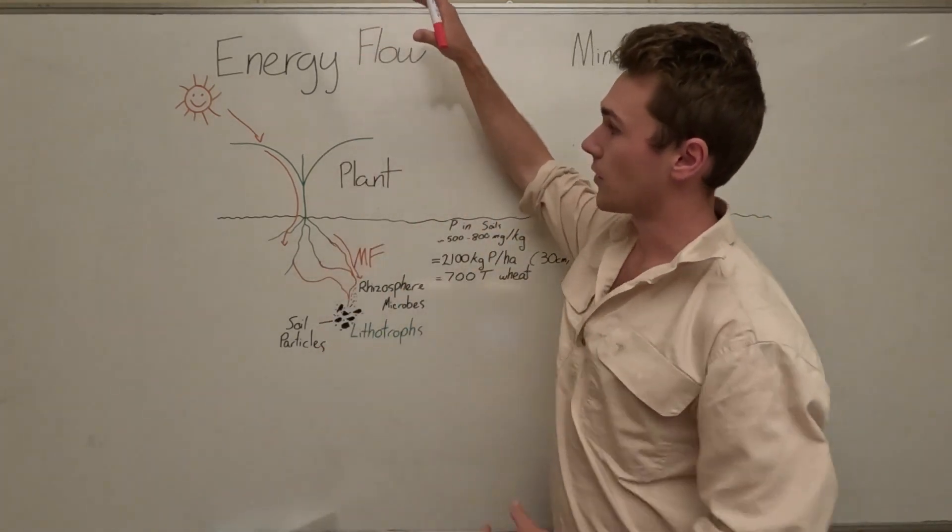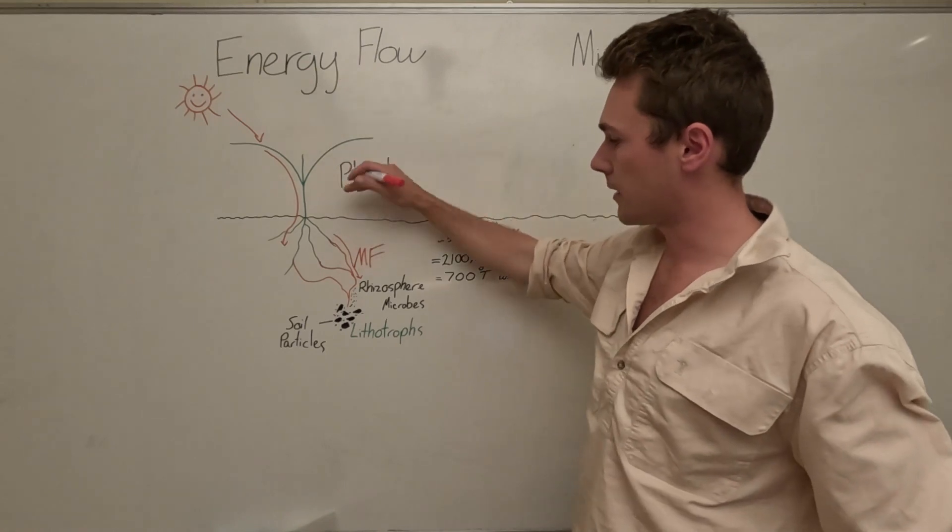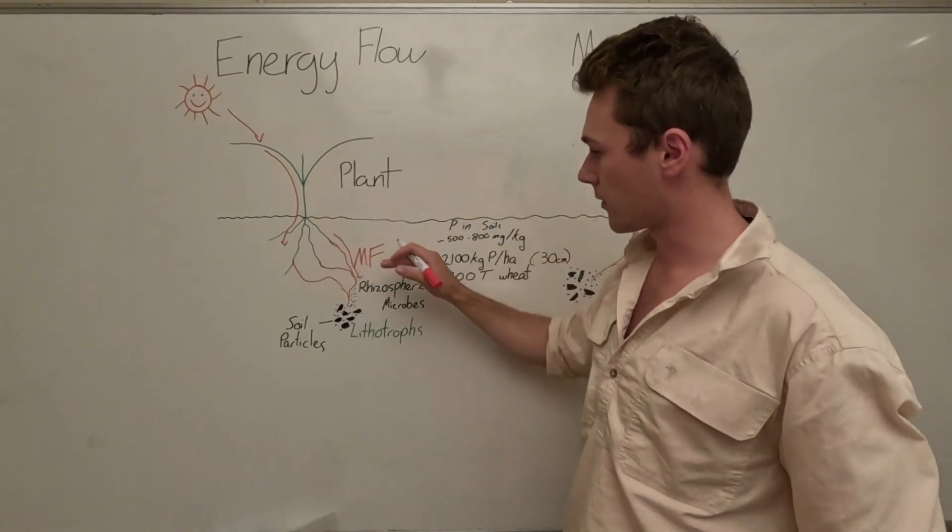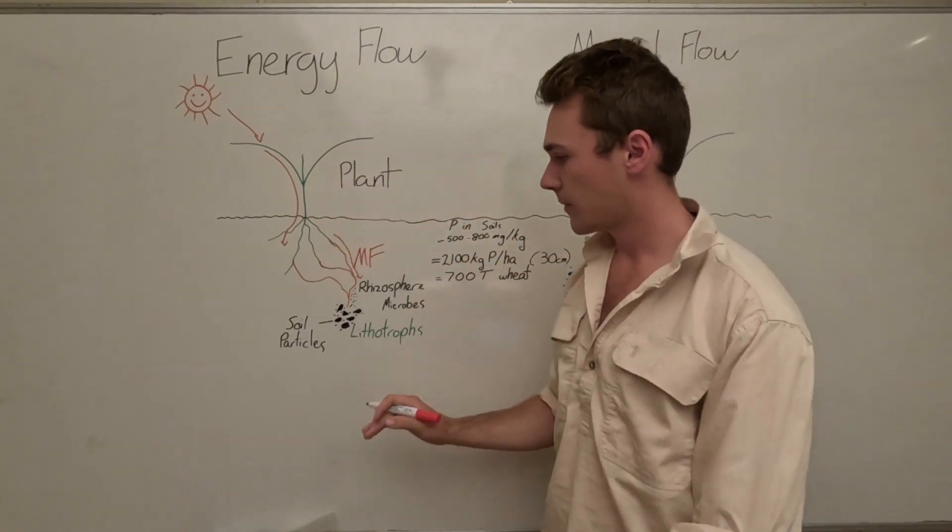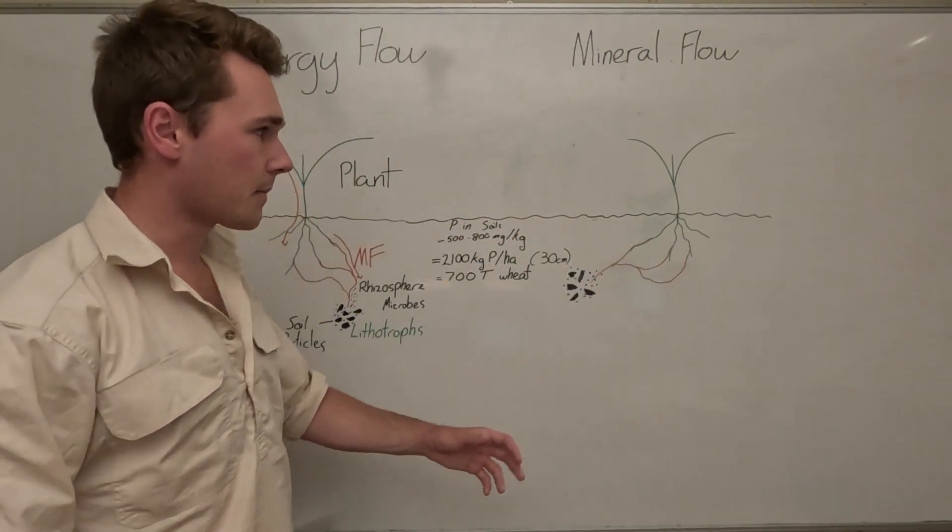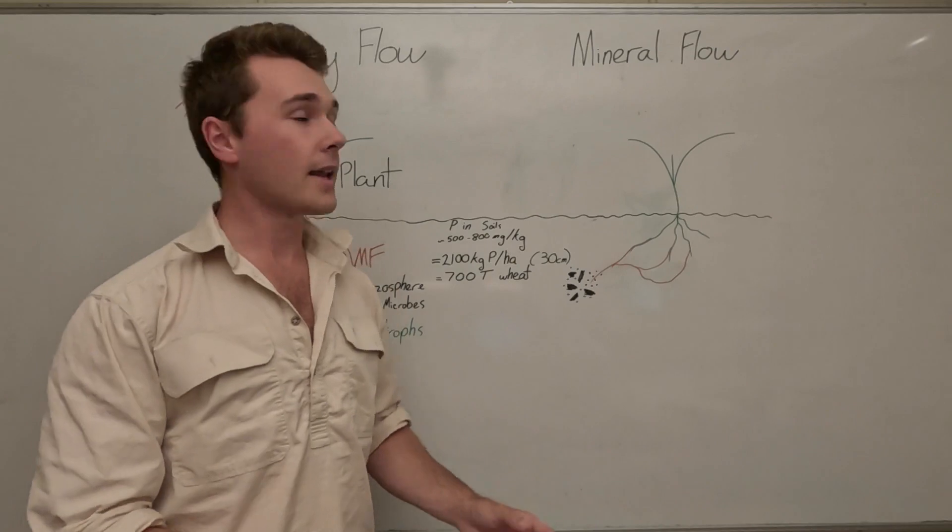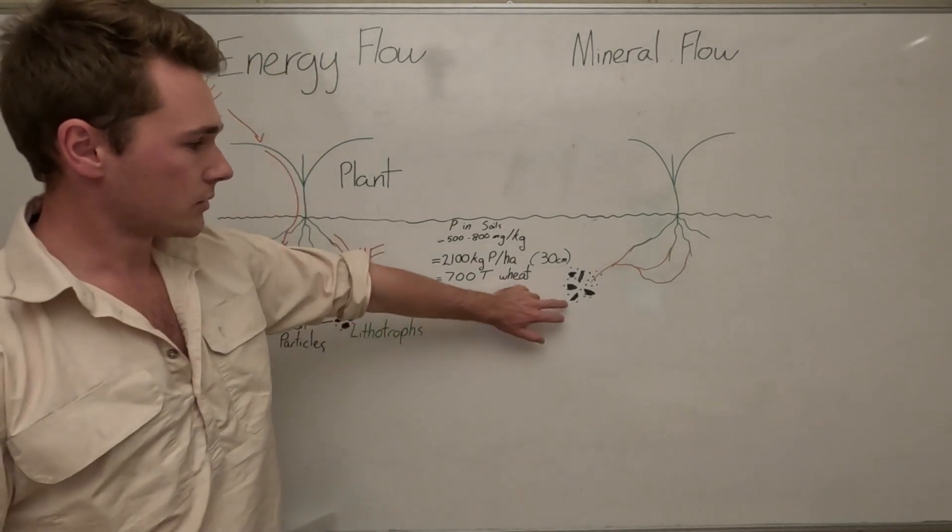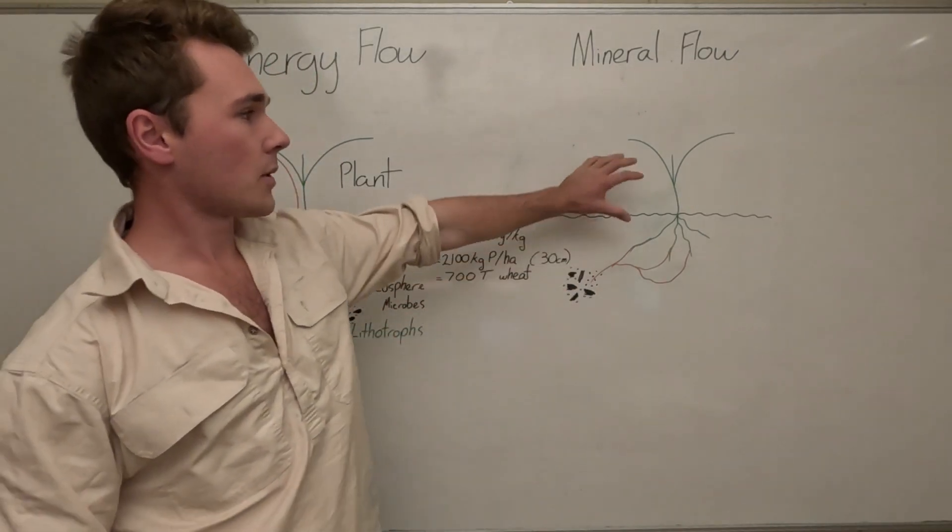Energy flows from the sun to the plant, mycorrhizal fungi, so out through the roots, mycorrhizal fungi, lithotropes. On the other side we have our mineral cycle. This is basically the complete opposite of that and minerals flow from our soil, so soil particles back up to our plant.